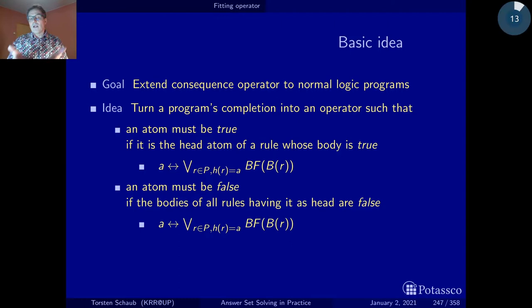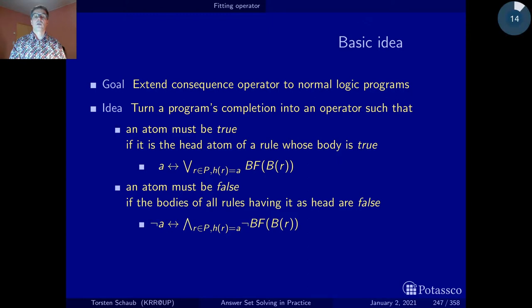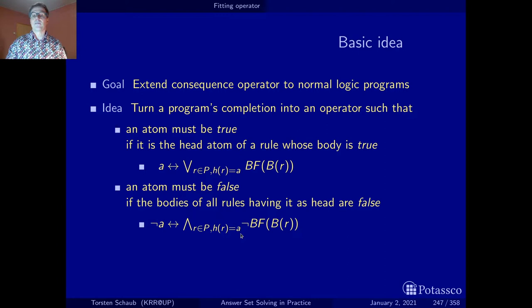Now let's examine the second condition. We are faced with the same equivalence; however, keep in mind that we can turn this equivalence into an equivalent equivalence by negating both sides of it. So this formula is equivalent to: not A is equivalent to the right-hand side. It says an atom is false if and only if all bodies of rules that have this atom in the head have been found to be false. Once we found out that all rules with A in their head are inapplicable, there is no way to derive A, and A can safely be assigned the truth value false.